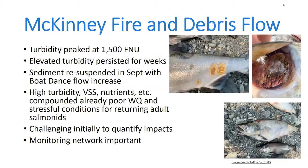Turbidity levels at the Seid Valley gauging station measured 1,500 FNUs — very high, stuff we don't see in typical storms. That turbidity granted went down considerably — it was a peak and then a decline — but we had elevated levels of turbidity for weeks afterwards. Once the high flows came out of Iron Gate, that sediment was resuspended again and we saw high turbidity levels again. Monitoring data collected during the debris flow showed very high turbidity, elevated volatile suspended solids, nutrients, etc.